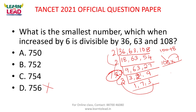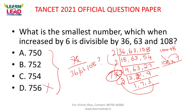756 is the answer. The number 36 — it is divisible by 36, 63, and 108. So what is your answer? 756. In your exam there are options — just select the correct answer. If you approach and make a mistake, you will still get the answer. If you think about it, it is correct.